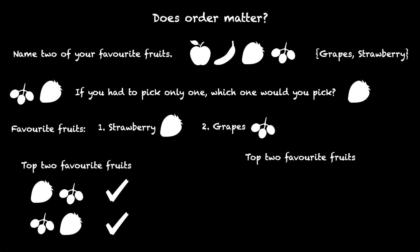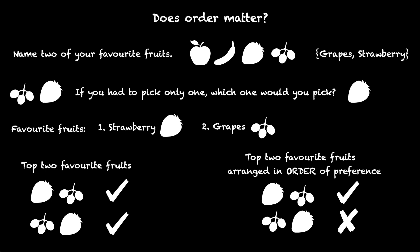if I ask you to write your top two favorite fruits in order, arranged in order of preference, how will you write them down? If strawberry is really your favorite fruit, you will write strawberry first and then grapes - this will work. You will not write grapes and strawberry - this will not work. So in this case, the order does matter.